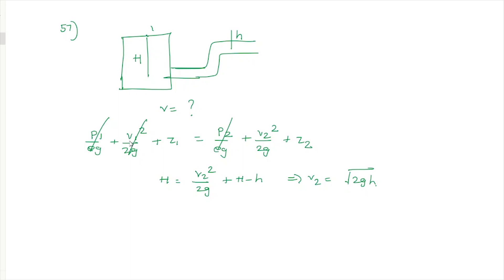These are all memory-based questions — overall the questions are very easy. If you attempt all of them, you can score 150 to 160 marks. After three to four days, the TRB website will release the answer key, so you can verify your responses. Thank you very much for watching this video.